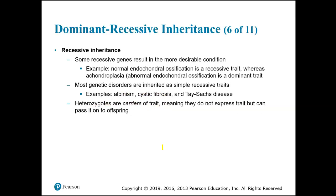Now for recessive conditions, normal endochondral ossification is a recessive trait, believe it or not, whereas achondroplasia is a dominant trait. So how can that be? Well, people who have achondroplasia don't have children as much, so you don't see that dominant trait as often. But the normal ossification of our bones as we grow — that process where our arm bones and leg bones grow longer and wider as we get older — is recessive.